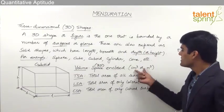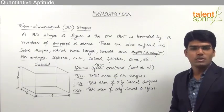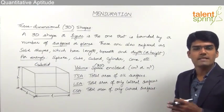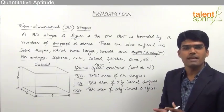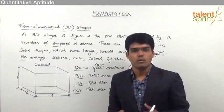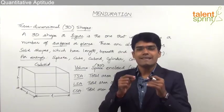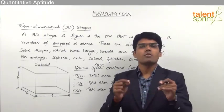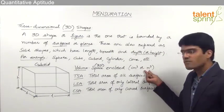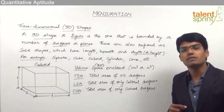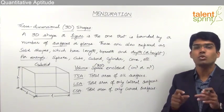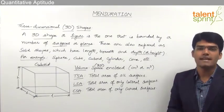Volume is generally measured in terms of centimeter cube or meter cube — these are the standard units. Just as we measure area in terms of meter square, where meter square is the area of a square of side 1 meter, volume is measured in terms of meter cube. One meter cube is the volume occupied by a cube of side 1 meter.